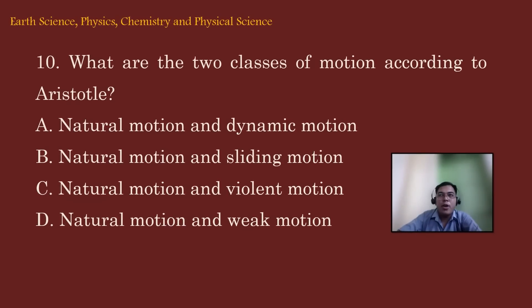Let's move on to item number 10. What are the two classes of motion according to Aristotle? A. Natural motion and dynamic motion. B. Natural motion and sliding motion. C. Natural motion and violent motion. And D. Natural motion and weak motion.